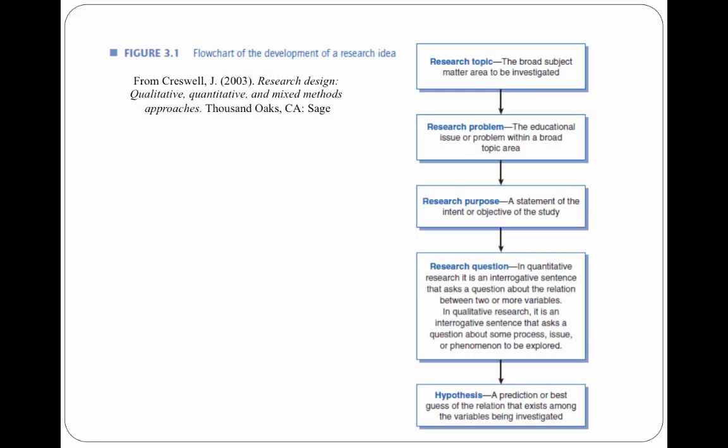After you have your topic, problem, and purpose statements all articulated, your final step for purposes of our course is to shape your purpose into one or more research questions. In a quantitative study, that means a question about one or two or more variables. In qualitative research, it's a question about some sort of process, issue, or phenomenon to be explored. In many social science research studies, researchers also generate hypotheses about what they think will happen. For purposes of this course, we're not going to be including hypotheses in our proposals unless you want to. However, research question, purpose, problem, and topic are all required.